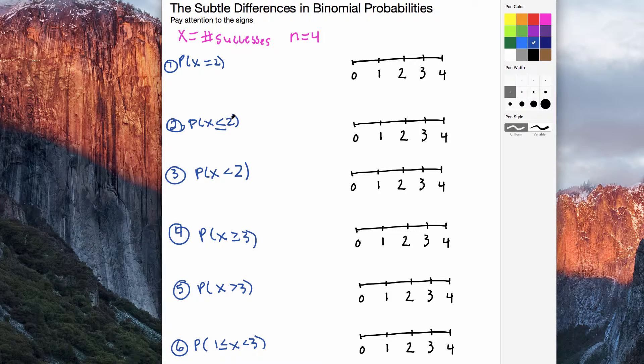Remember, the alligator will eat the bigger number. So that means that x has to be less than 2, but then this sign says we can include 2 as well. So let's do a little highlighting here. The probability that x equals 2 means that we're only looking for this one outcome, x equals 2.